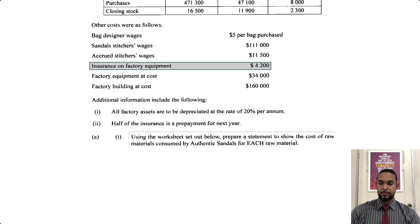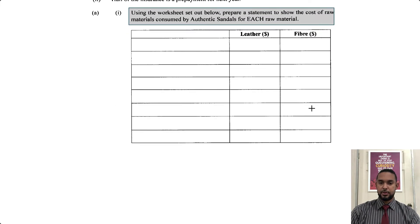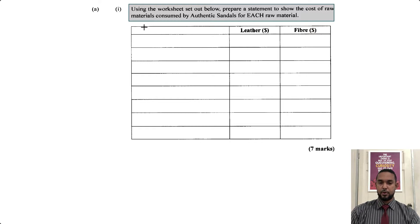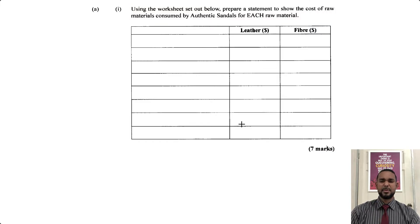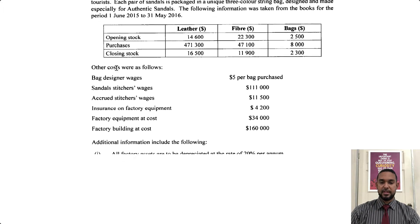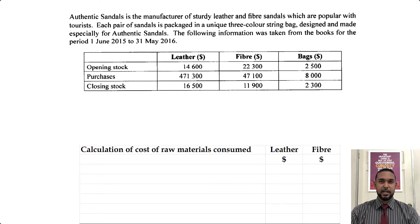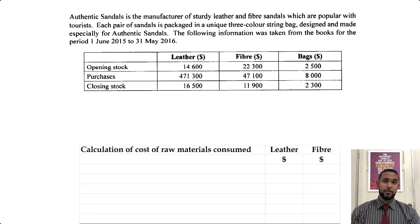So use the worksheet below. Prepare a statement to show the cost of raw materials consumed by Authentic Sandals for each raw material — leather and fiber — for seven marks. So basically what they want is the cost of the raw materials used, which is basically like a cost of goods sold calculation: opening stock plus purchases minus closing stock. I don't think we have any returns out nor any carriage in, so it's going to be relatively straightforward. I'm going to do both at the same time, focusing on the information in both of these columns.